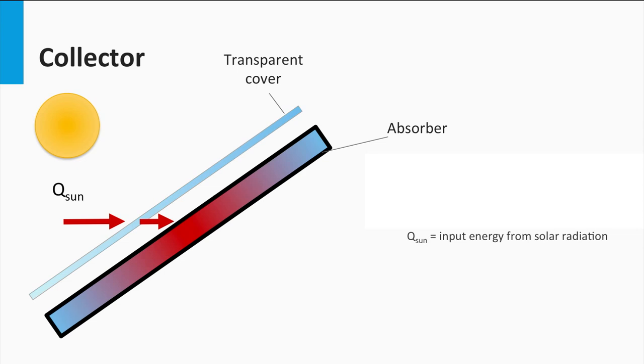The absorber is able to absorb most of the incident energy from the sun, through the transparent cover, represented as Q_sun, raising its temperature and transferring that heat to a working fluid. Thus, the absorber can be cooled and the heat can be transferred elsewhere. Here the output energy moving with the working fluid is represented by Q_col. But not all the incident light is converted into heat. A part of it, Q_ref,